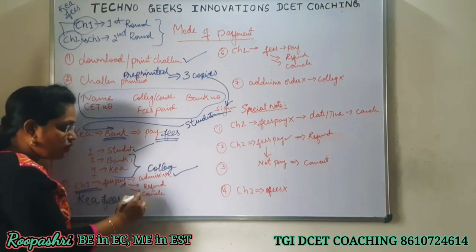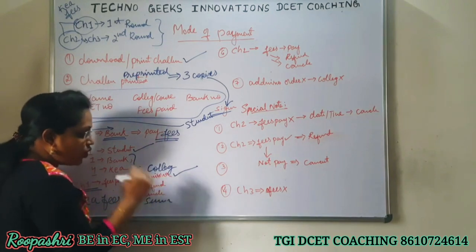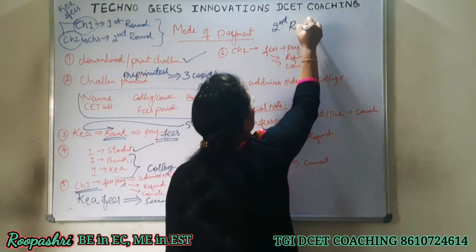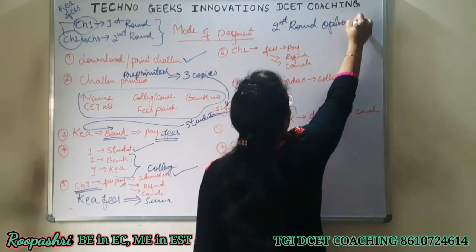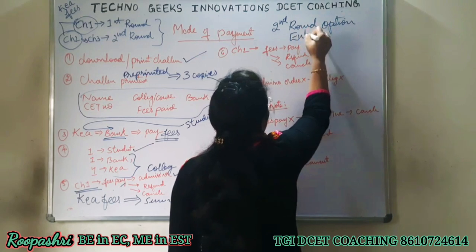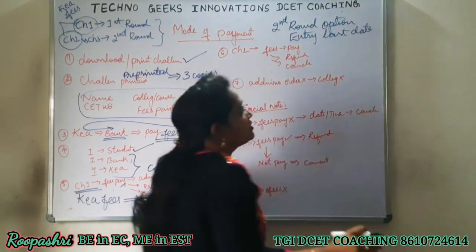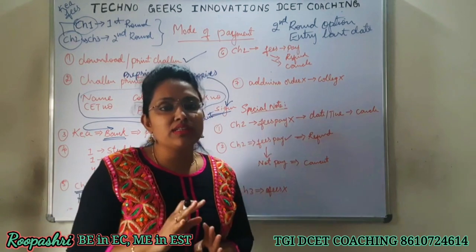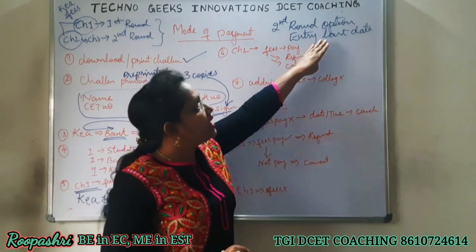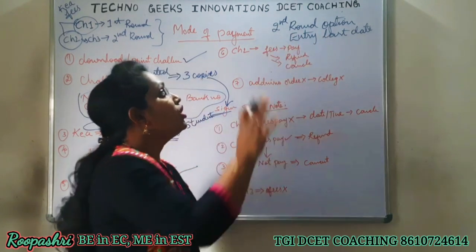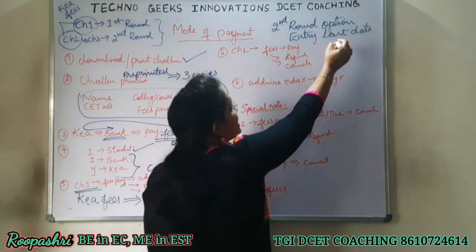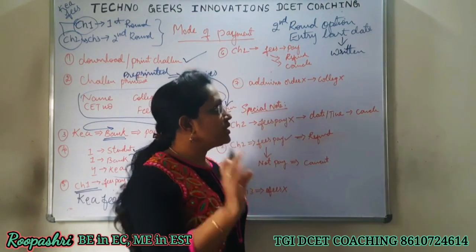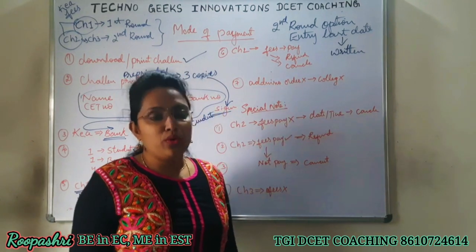But if you don't want to continue with the allotted seat, you can surrender it before the second round option entry. Before the second round option entry last date, you need to go to the K.E.A. website, check the dates announced, and before that date submit the written letter as required with all the required documents.